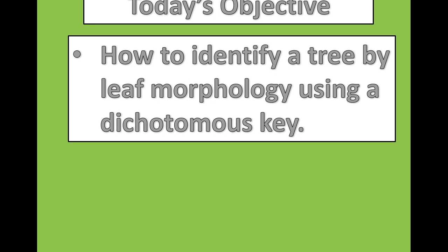By the end of today's lesson, you will be able to identify trees commonly found in the state of Ohio using an online dichotomous key. A dichotomous key asks you specific questions with one or two answers and will allow you to narrow down the possible trees based on leaf morphology.